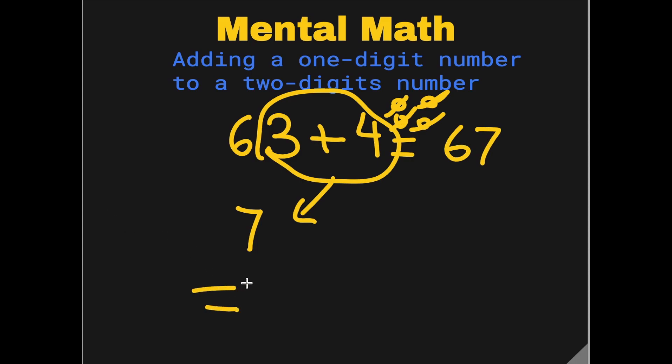So what you're doing is separating the 60 and adding the one-digit numbers separately. Let's do another one.